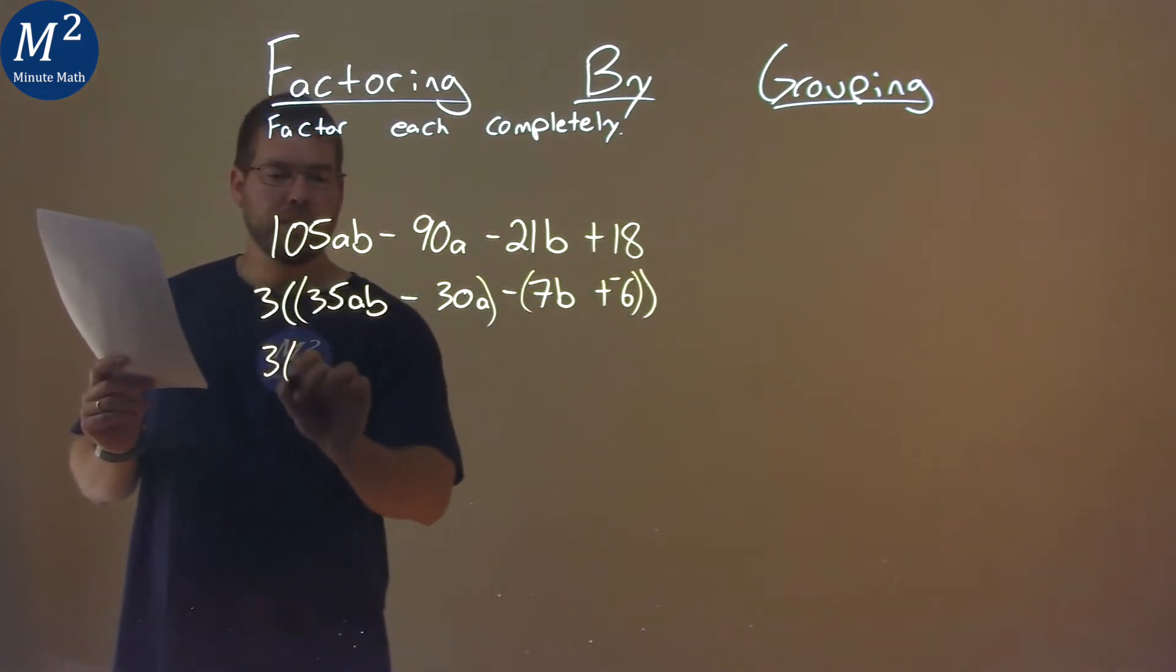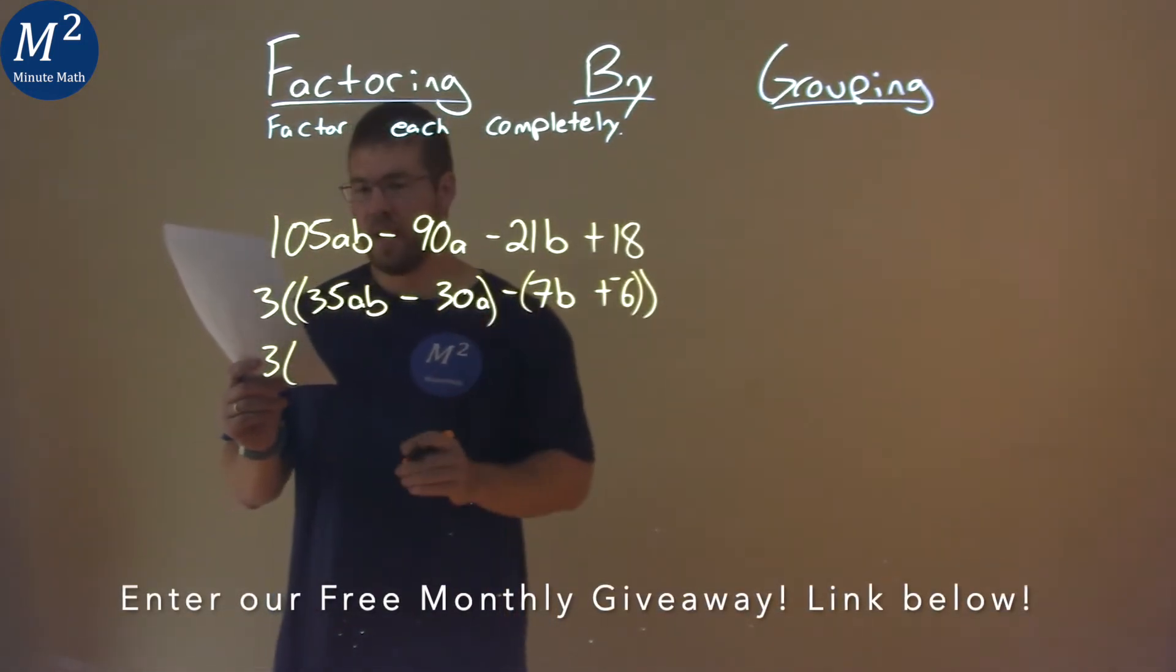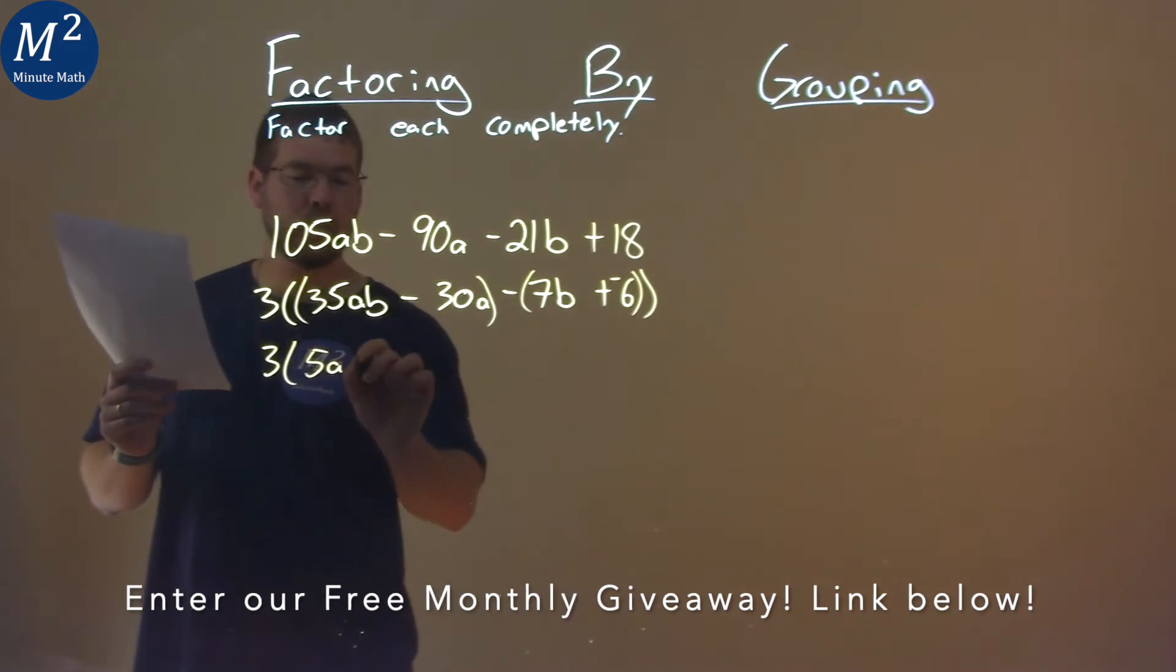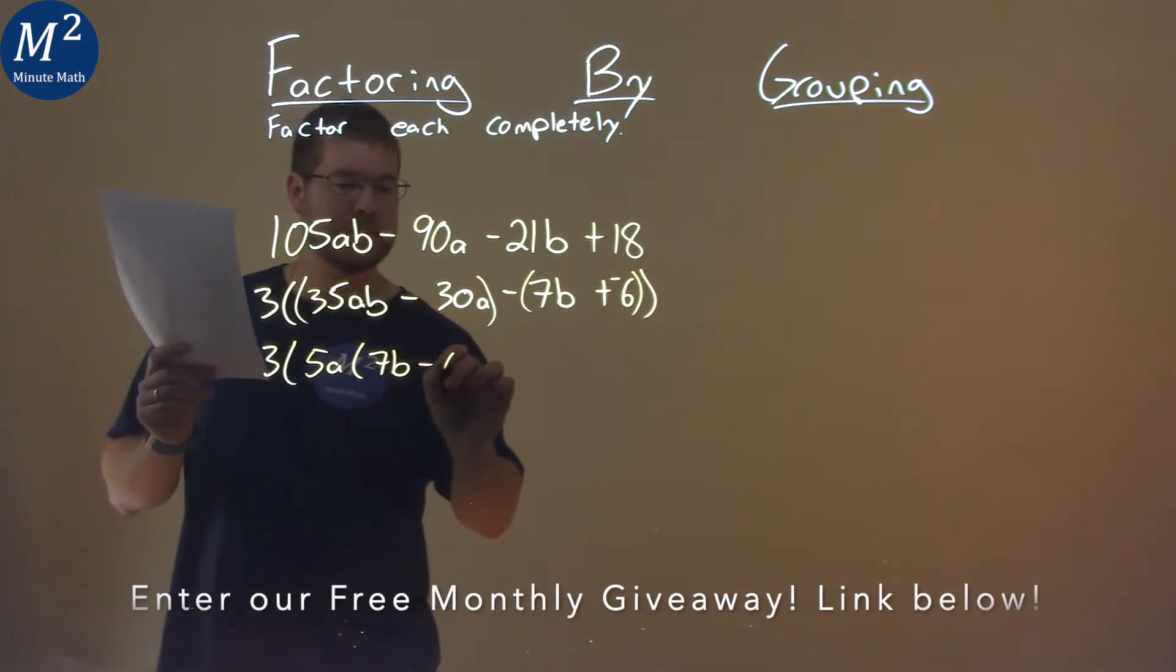So now going down, what is in 35ab as well as 30a? And that's going to be 5a. So we pull out a 5a from there and we're left with 7b minus 6.